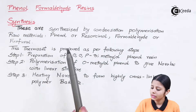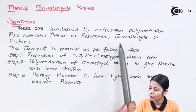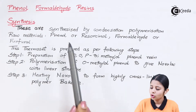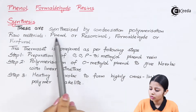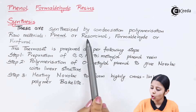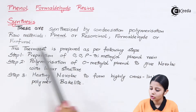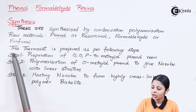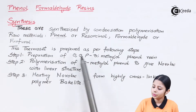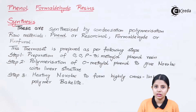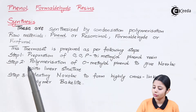The raw materials are phenol or resorcinol, and formaldehyde or furfural. We can use either phenol or resorcinol combined with either formaldehyde or furfural. The thermoset is prepared as per the following three steps, and we will study each and every step in detail.